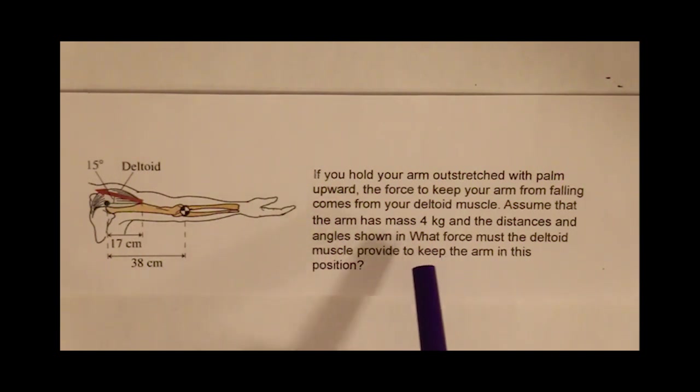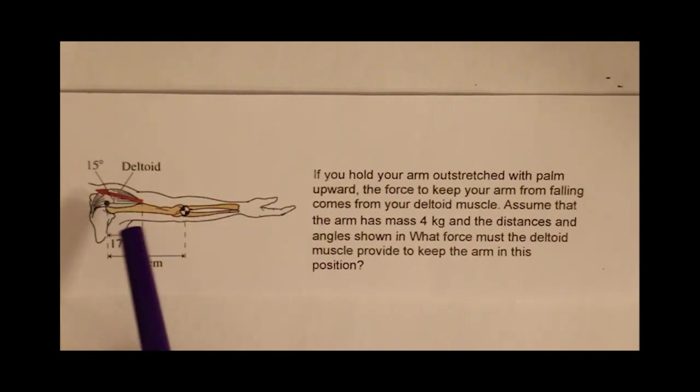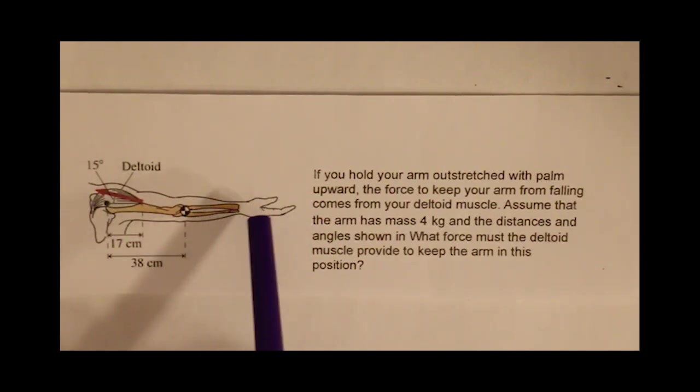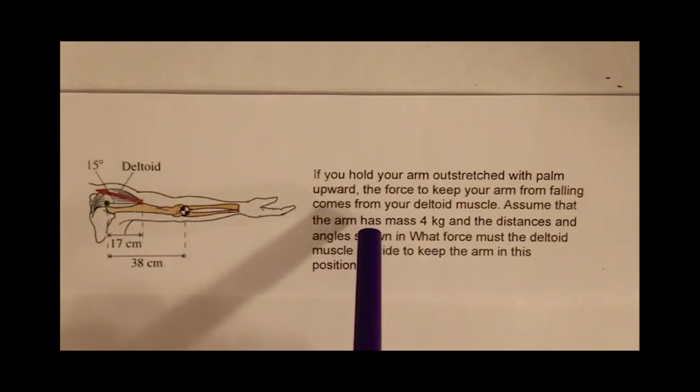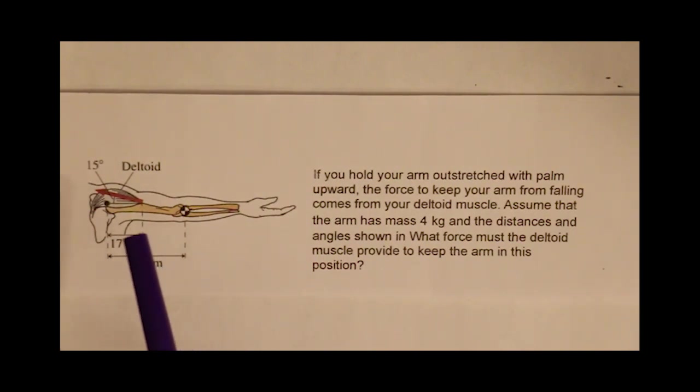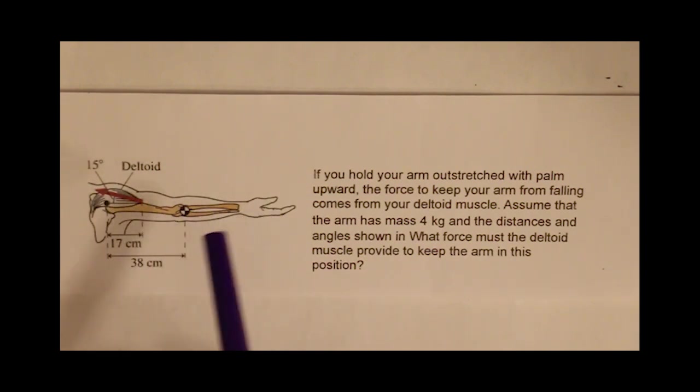So the question is, what force must the deltoid muscle provide to keep the arm in this position? The deltoid muscle is what is keeping the arm up, but there are two torques going on here.